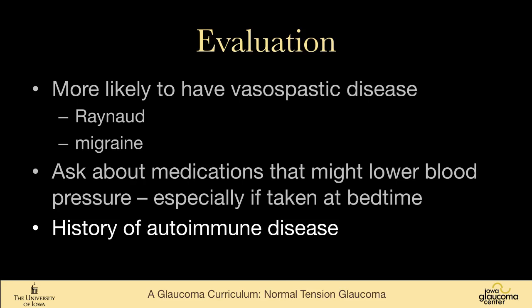One can ask for a history of autoimmune disease. There are some studies that suggest autoimmune disease is associated with normal tension glaucoma. More recently, we're finding that people who have low cerebrospinal fluid pressure can have evidence of advancing glaucoma — that having a low CSF pressure is a risk factor for worsening glaucoma. This is a fairly new area of study and more needs to be learned about CSF pressure.